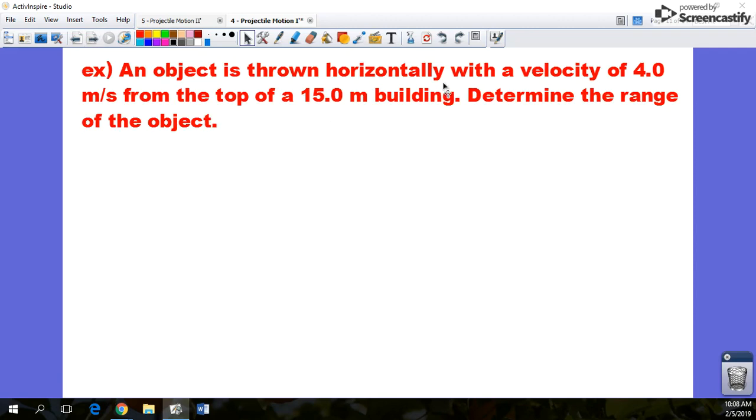We've got an object thrown horizontally with a velocity of 4 meters per second from the top of a 15 meter tall building. What's the range of the object? It's a fancy way of saying how far does it go horizontally. First thing to do in a problem like this, you want to draw a diagram.